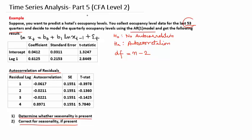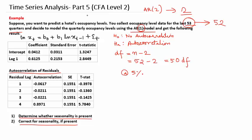The question states 53 quarters, but since we use an AR1 model, we lose 1 observation, making n equal to 52. So degrees of freedom equal 52 minus 2, giving 50 degrees of freedom. At 5% significance level with a two-tailed test, the critical t-value from the t-table at 50 degrees of freedom is approximately 2.01.